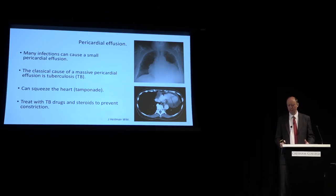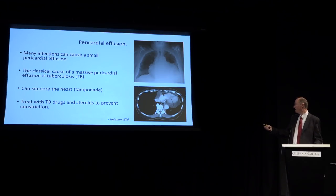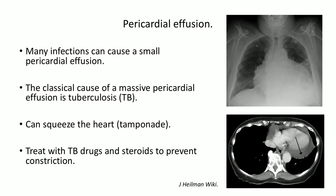Around the heart, infections — classically TB — can cause fluid to build up in the pericardial sac. This can compress the heart and stop it beating properly. If not treated rapidly with anti-infectives and steroids, the sac can become inflamed, scar down, and constrict the heart. So infections can damage the heart structures — valves, muscle, rhythm, and the pericardium — all of which can cause heart failure.